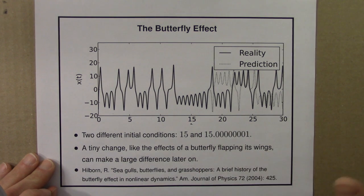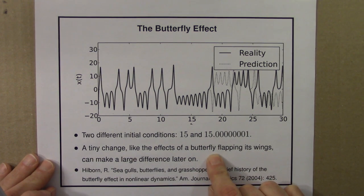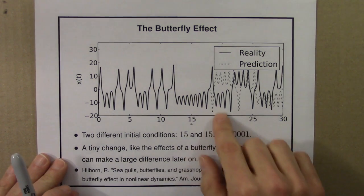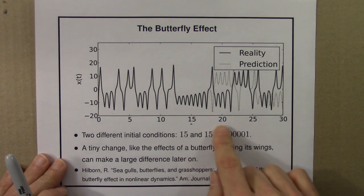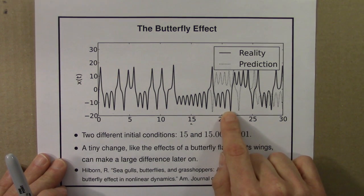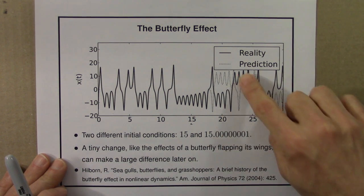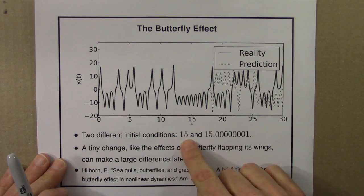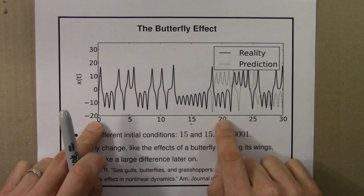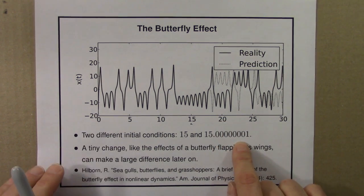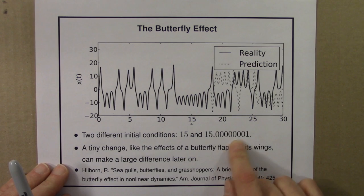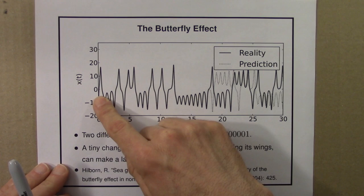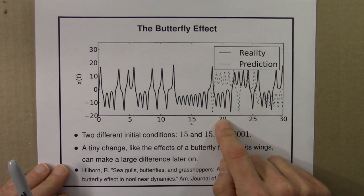So a tiny change — this is the idea — like the effects of a butterfly flapping its wings can make a large difference later on. Speaking somewhat metaphorically, this is somehow the path of a hurricane. And in this version it hits New York City and in this version it hits North Carolina. The difference — maybe this is wind speed or something — 20 hours ago or 20 days ago, who knows. And so this tiny difference could be caused by the flapping of a butterfly's wings.